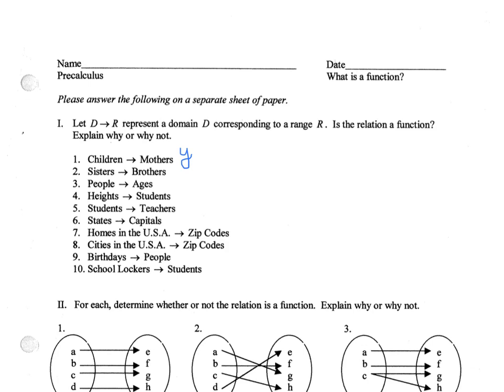This is a no, as sisters can have more than one brother. This is a yes, as people have only one age. This is a no, as several students could possibly be the same height. This is a no, as students can have more than one teacher.